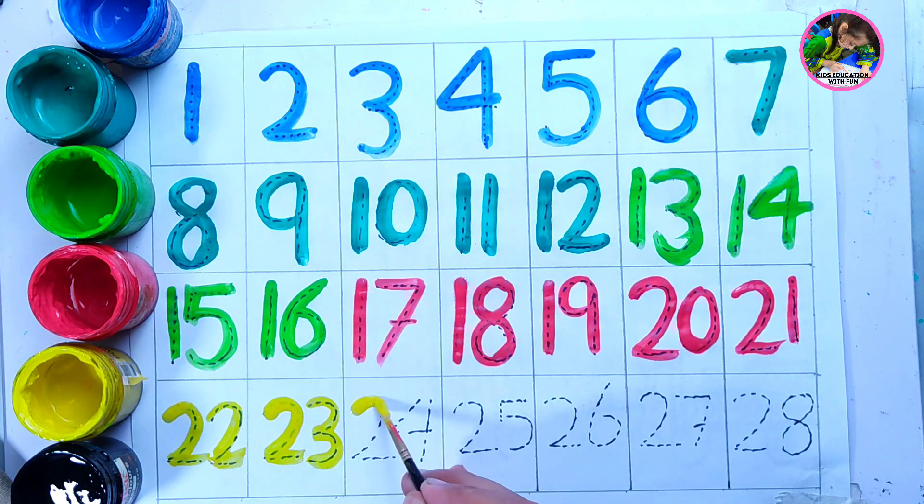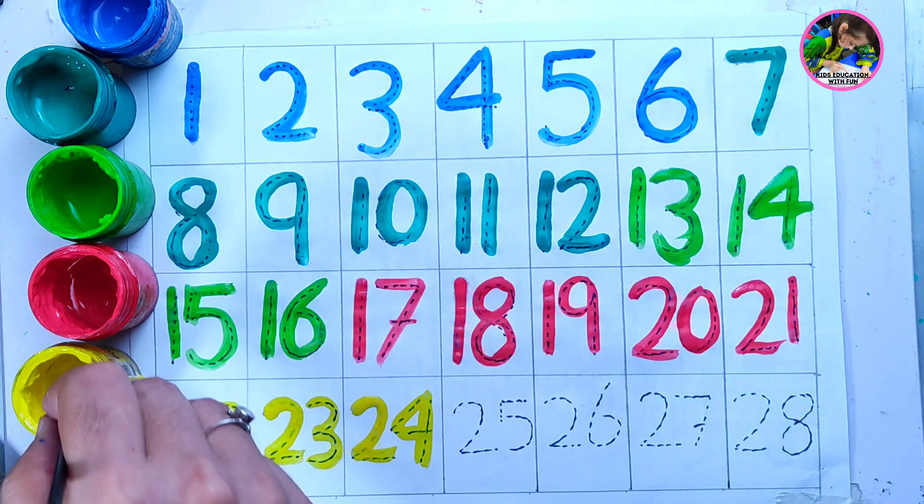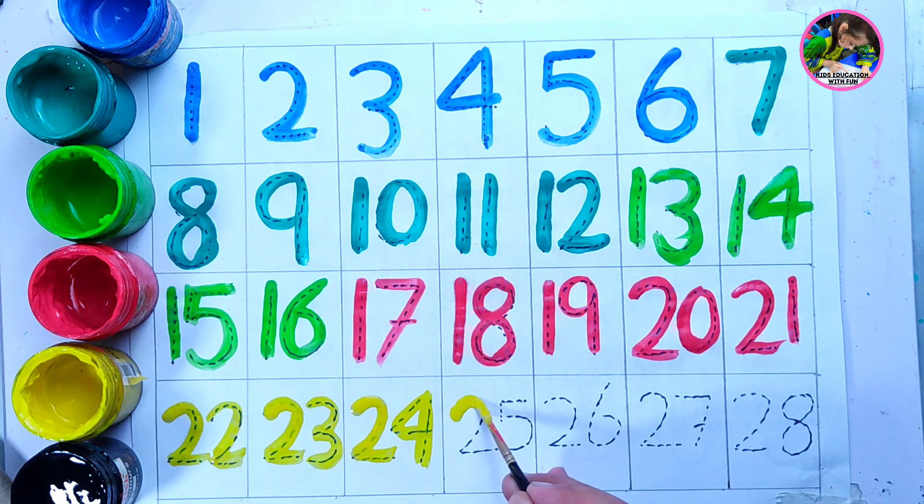22, 23, 24, 24, 25. The last number here is 28, but this one is 25.